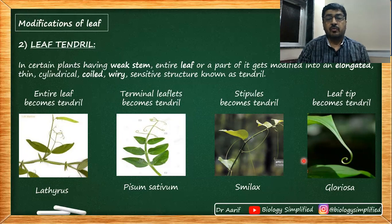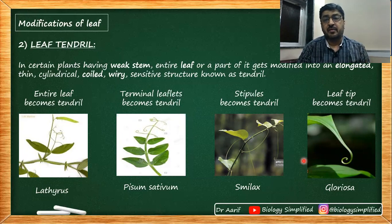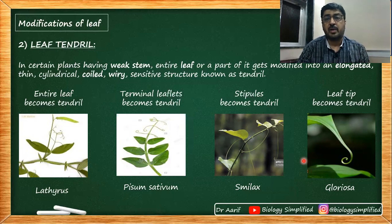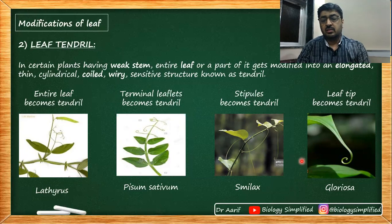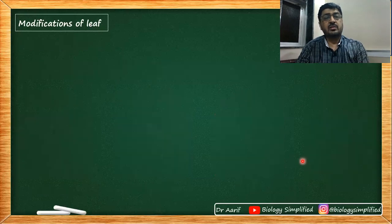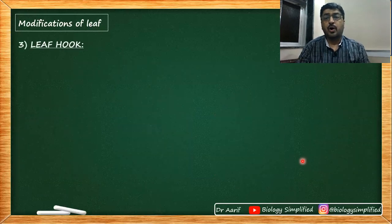So we had four instances of leaf modifying into spine, and we also have four instances of leaf becoming a tendril. The third modification is a leaf hook.